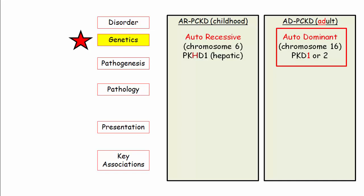Genetics is highlighted with a big star given its importance. The adult form is autosomal dominant — the AD in adult serves as a reminder — and the autosomal recessive is associated with the childhood form. The genetic mutation in both forms affects the PKD gene, except the childhood form has an H added, reflecting hepatic involvement. Autosomal recessive PKD is associated with the PKHD mutation, and autosomal dominant is associated with PKD1 or PKD2 mutation. The chromosomal locations are listed for completeness but aren't specifically tested.